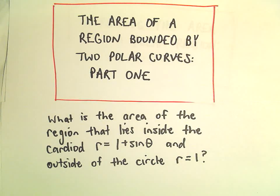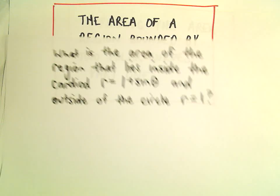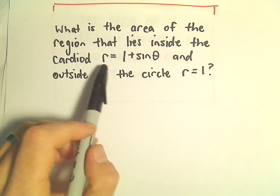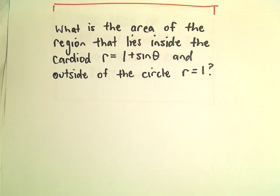Alright, here we're going to look at another example of finding the area of a region bounded by two polar curves. So we want to find what is the area of the region that lies inside of the cardioid r equals 1 plus sine theta and outside of the circle r equals 1.